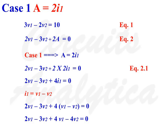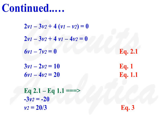Case 1: A is equal to 2I1. Rewriting Equation 2: 2V1 minus 3V2 plus 2 times 2I1 equals 0, giving 2V1 minus 3V2 plus 4I1 equals 0. Since I1 equals V1 minus V2, and from Equation 1, 3V1 minus 2V2 equals 10, we get 6V1 minus 4V2 equals 20 as Equation 1.1. Subtracting Equation 1.1 from the updated Equation 2.1, we get minus 3V2 equals minus 20, so V2 equals 20 divided by 3.